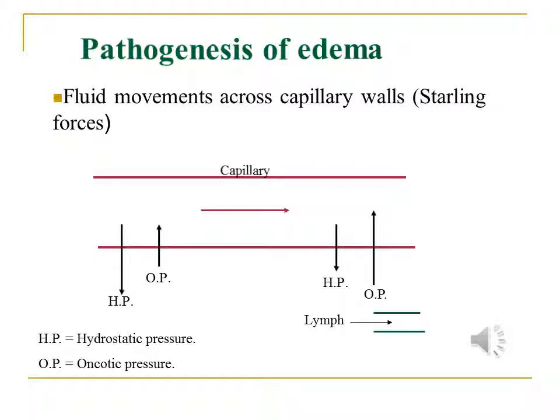Edema also occurs when the oncotic pressure decreases as a result of a decrease in the concentration of plasma proteins, which occurs in renal disease, hepatic disease, malnutrition, malabsorption, and so on. Edema can also occur when the permeability of the capillary wall increases as a result of inflammation. This causes protein to ooze from the inside of the capillary to the outside, causing a decrease in concentration inside and an increase outside.